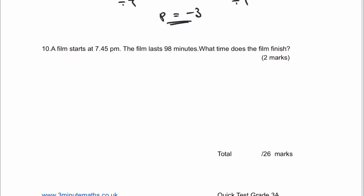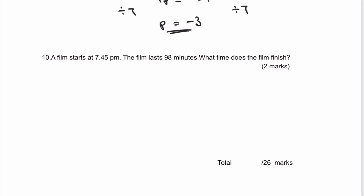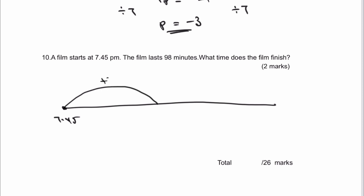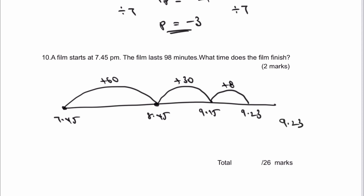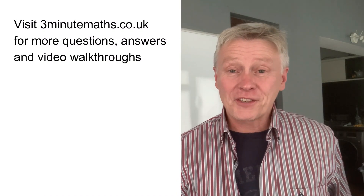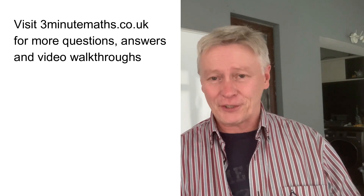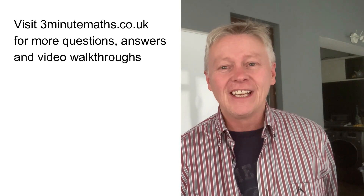The final question: a film starts at 7:45 p.m. and lasts 98 minutes. Using a timeline — add 60 minutes to reach 8:45 p.m., then 30 more minutes to reach 9:15 p.m., then 8 more minutes — gives a finish time of 9:23 p.m. I hope that was useful. Please subscribe, add a comment if unsure about anything, and I'll look forward to seeing you in the next video.